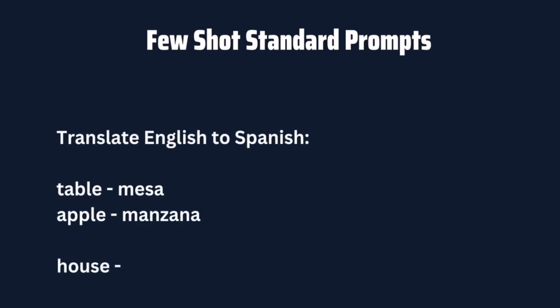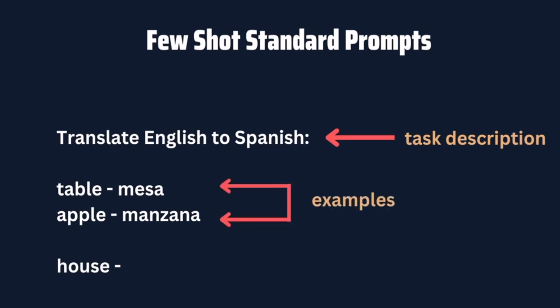Few-shot standard prompts are like the prompts we've seen before, but with multiple examples. We include examples to increase the chances of getting the desired result. Few-shot prompts consist of a task description, examples, and the prompt itself — which is the beginning of a new example the model should complete. For instance, 'Translate English to Spanish: table → mesa, apple → manzana, house →' — this gives context and shows the expected output format.